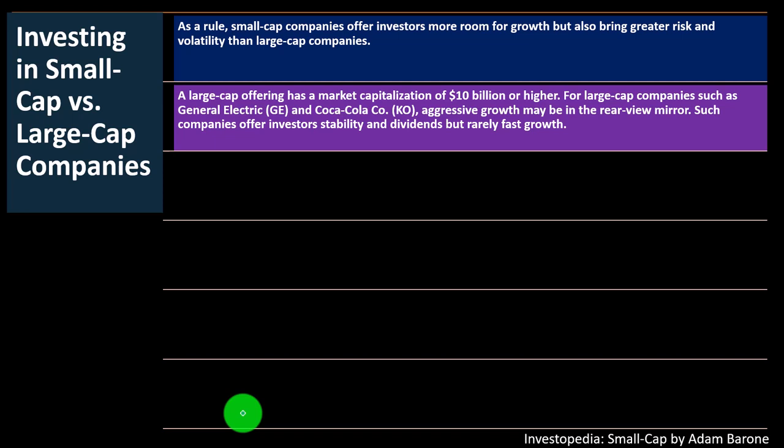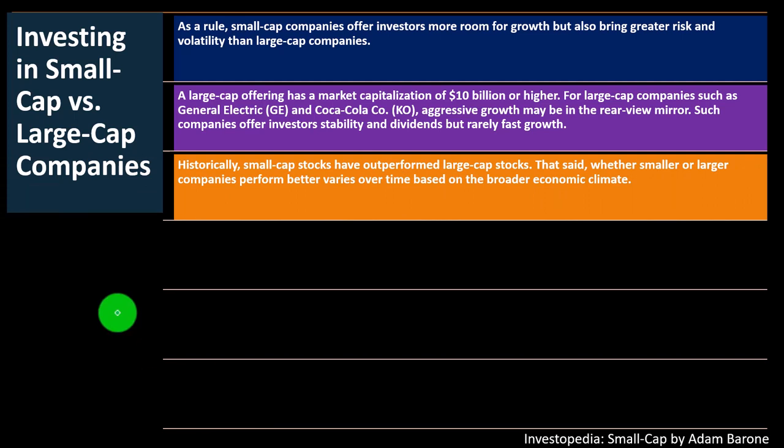For large cap companies such as General Electric and Coca-Cola, aggressive growth may be in the rearview mirror. Such companies offer investors stability and dividends, but rarely fast growth. A lot of the companies that are kind of name brands we know are often those bigger, well-established companies. We don't expect them to have some big growth spurt, but we do expect them to generally march along. Therefore, the earnings they generate, we might expect them to give a dividend, as opposed to reinvesting it to purchase more property, plant, and equipment for more growth in the future.